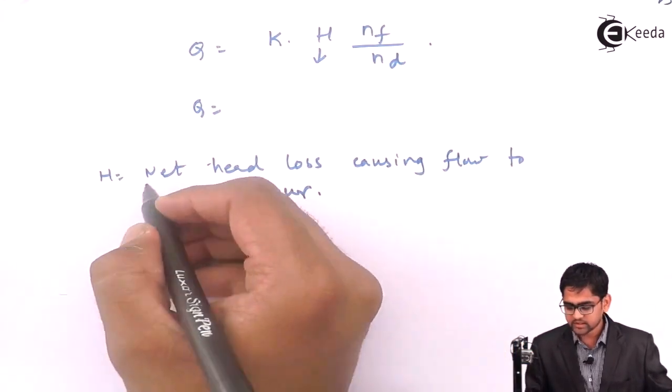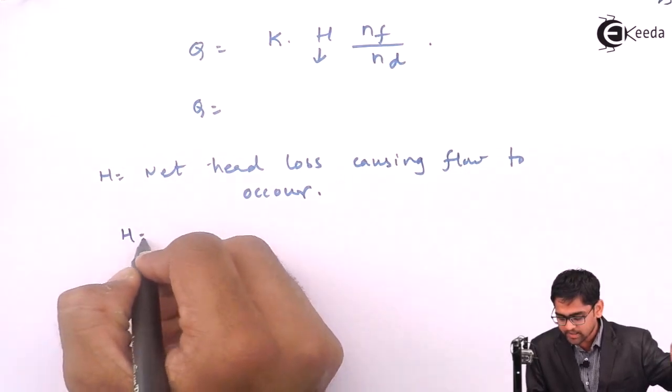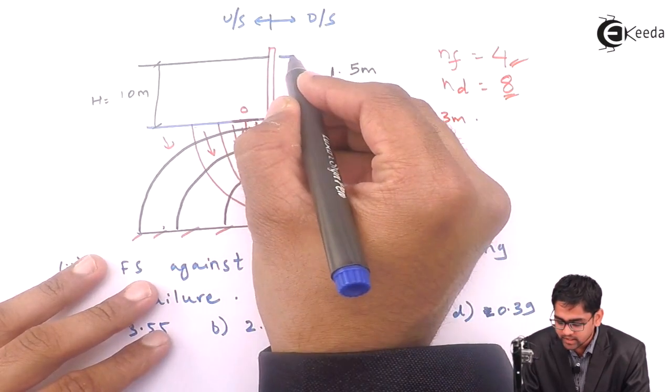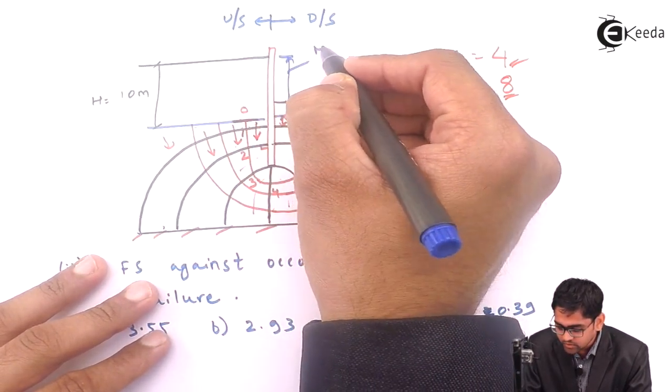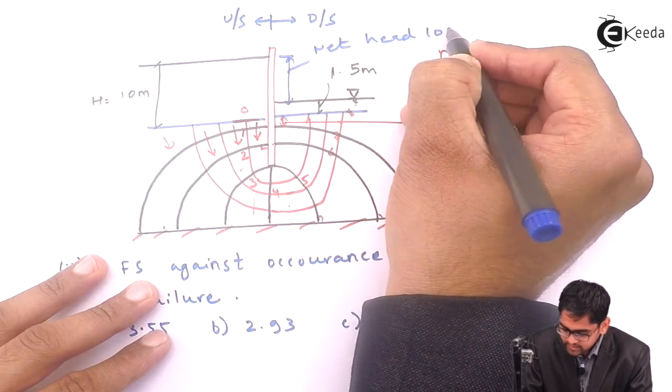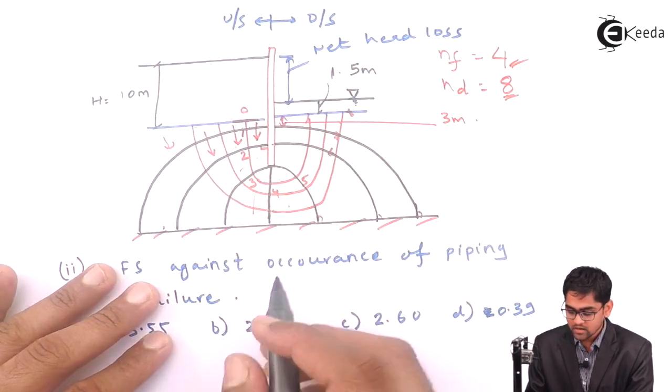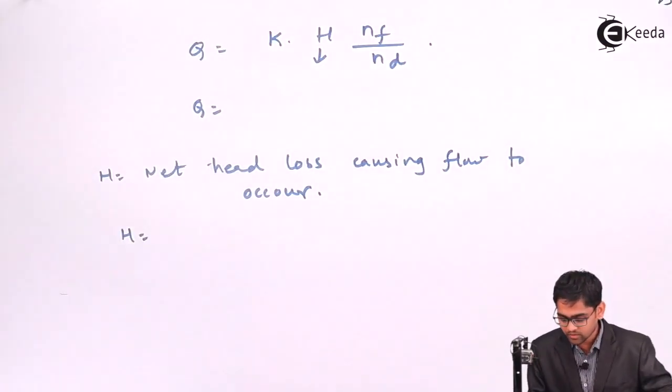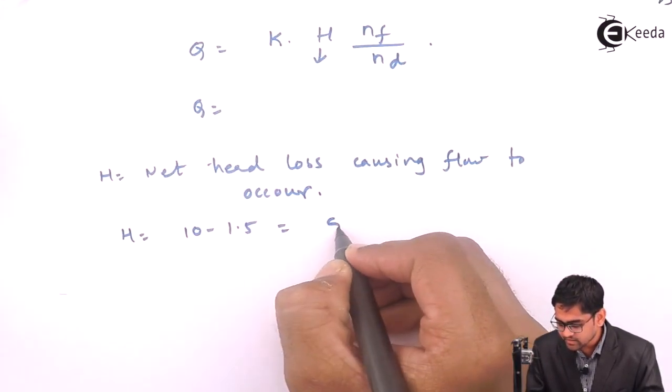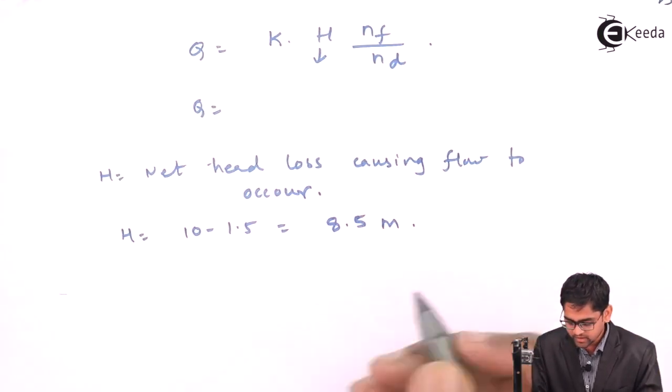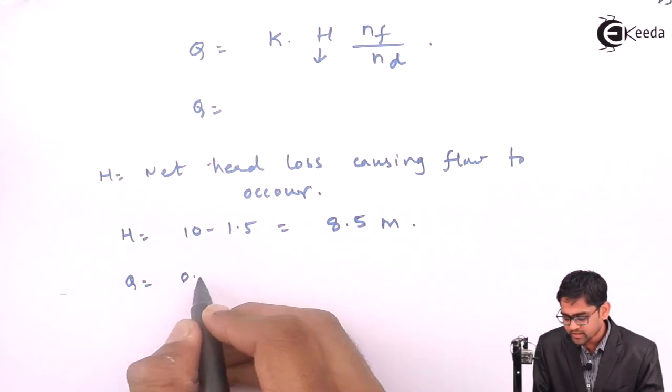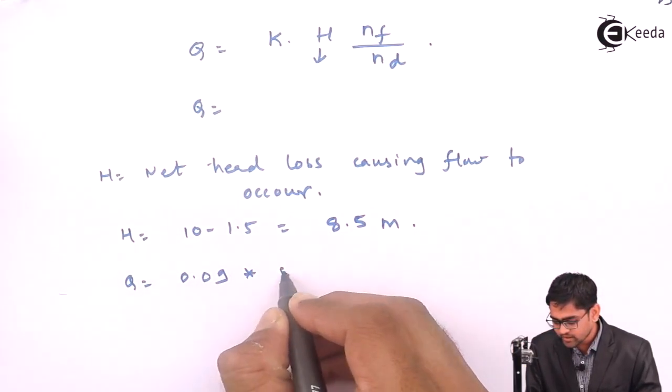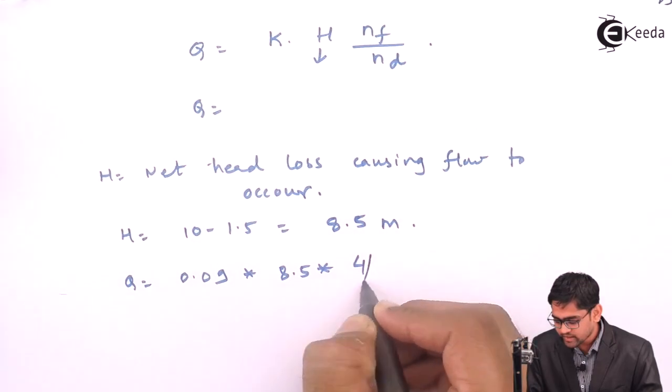So h becomes equal to 10 minus 1.5 because this is the net head loss causing flow to occur. This is the entry phase, this is the exit phase. The total head at 1 minus total head at 2 is the net head causing the flow to occur. It becomes 10 minus 1.5, which is 8.5 meter. Therefore, q will be 0.09 in meter cube per day per unit length into 8.5 into 4 divided by 8.